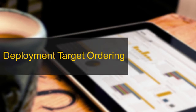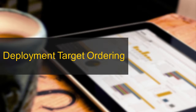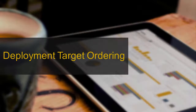Hello and welcome to this Atomic technical video on how you can influence the deployment order of application components to multiple deployment targets within Atomic Release Automation. For example, the deployment order might be important when you have a global deployment and you want to have servers in Europe deployed first before you deploy servers in the US or Asia.